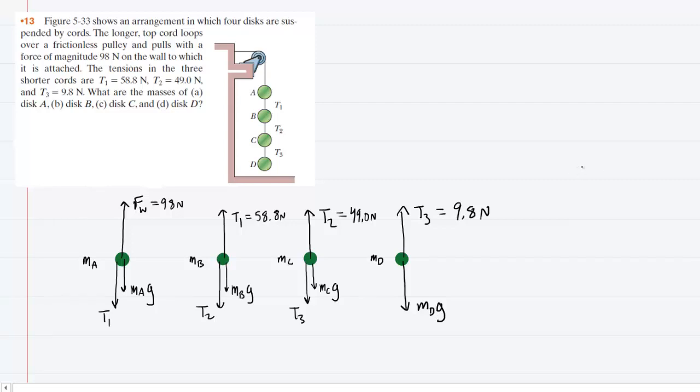In order to determine the masses of each of the four disks, what we need to first do is draw a free body diagram for each disk showing the forces that are acting on that disk.